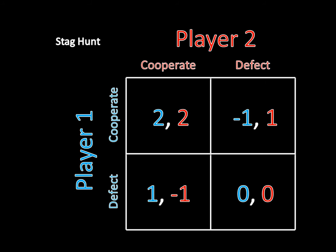Anyway, when you switch those payoffs around, what we're seeing is that both players most prefer now to cooperate. The way that each individual gets his highest payoff is by cooperating as long as the other player is cooperating as well. So that is the big switch from the prisoner's dilemma to The Stag Hunt, and I want to illustrate a few key results that we can get if we make this switch.